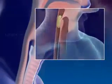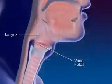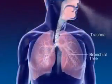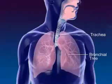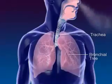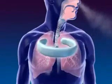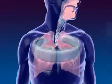The larynx, or voice box, contains the vocal folds. The trachea, or windpipe, connects the larynx to the bronchial tree. The cartilage rings of the trachea prevent the trachea from collapsing.